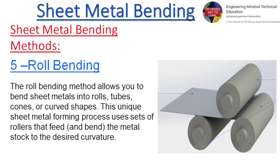Roll bending: The roll bending method allows you to bend sheet metals into rolls, tubes, cones, or curved shapes. This unique sheet metal forming process uses sets of rollers that feed the metal stock to the desired curvature.